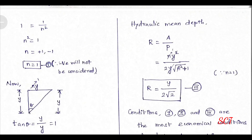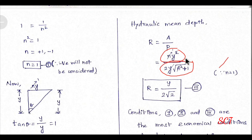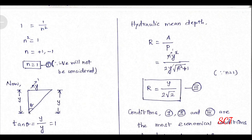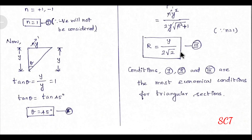Next, we find the hydraulic mean depth R = area / perimeter. Area = ny² = 1 × y² = y². Perimeter = 2y√(n² + 1). Substituting n = 1: perimeter = 2y√(1 + 1) = 2y√2. Therefore, R = y² / (2y√2) = y / (2√2). These three conditions — n = 1, θ = 45°, and R = y/(2√2) — are the most economical conditions for a triangular section.